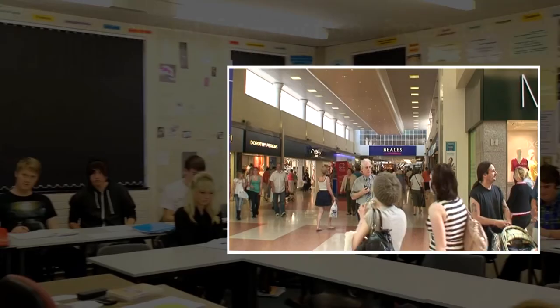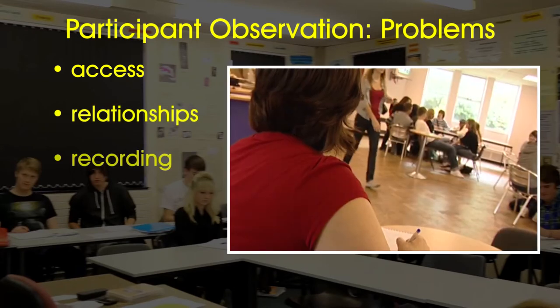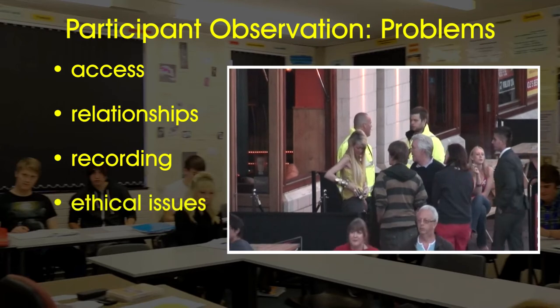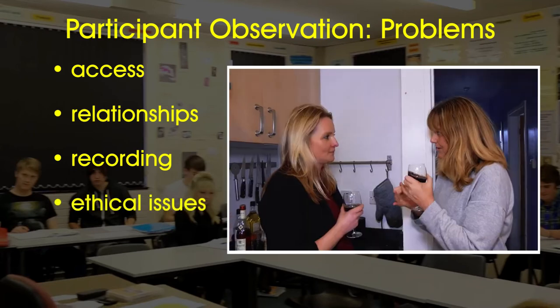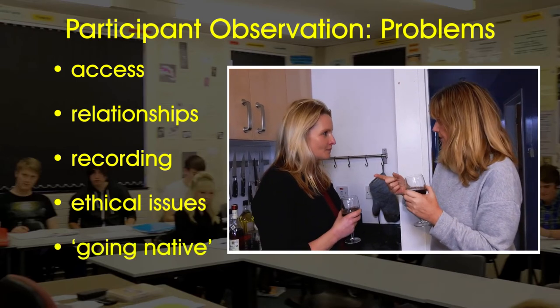However, despite its strengths and its popularity in sociology, it's important to recognise both the problems and weaknesses of participant observation. It takes a long time to do and there are constant problems and difficulties, such as getting access to those you want to study, maintaining relationships with them and recording information. There may well be ethical issues, especially if you're doing covert observation. And you have to avoid going native – that's getting too involved and losing your objectivity. These are real problems, but they can be overcome. However, there are also weaknesses built into the method that can raise questions about the objectivity of the data.